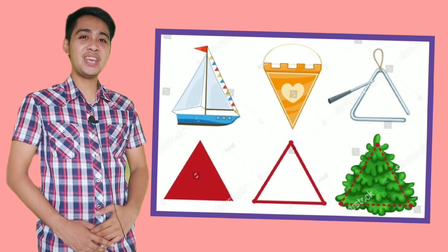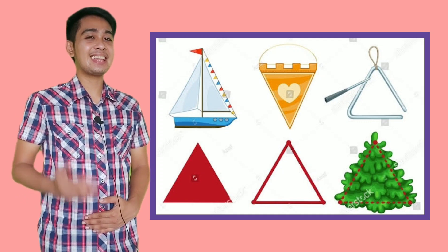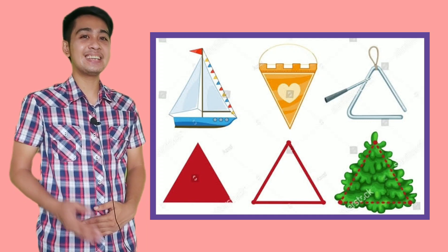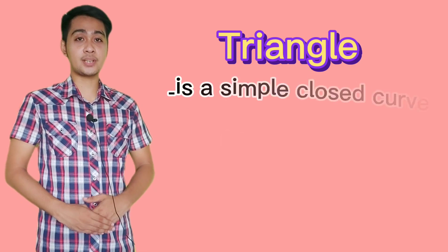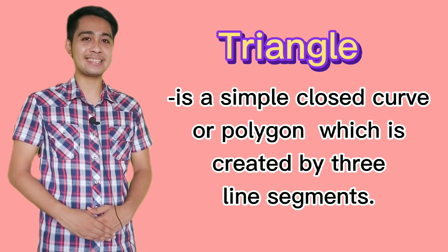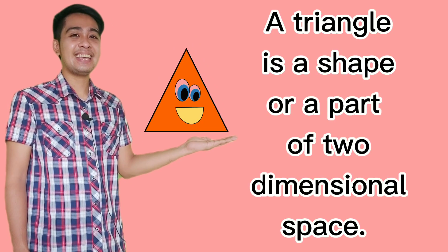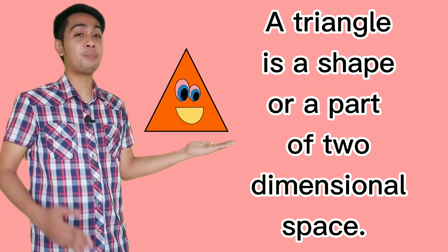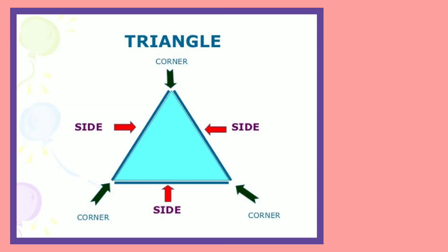Study the following figures. I know what's on your mind. The shape of these figures is a triangle. It's a closed curve or polygon which is created by three line segments. A triangle is a shape or part of a two-dimensional space. It has three sides and three vertices.